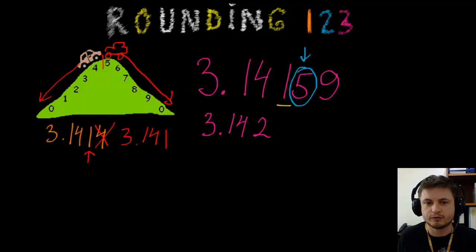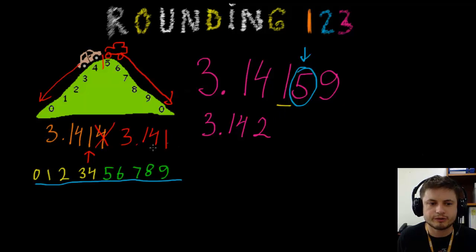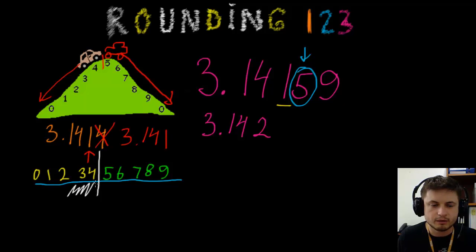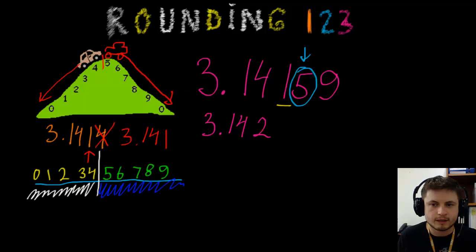So 3.142 is pi to four significant digits, or we can also say three decimal points. Just to summarize: if you draw a vertical line separating the digits, everything on the left side stays the same, and the last digit on the right side goes up by one. That's something you should already remember, and hopefully this helps you recall it.